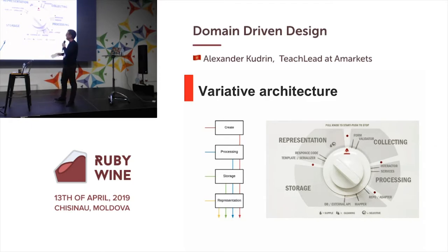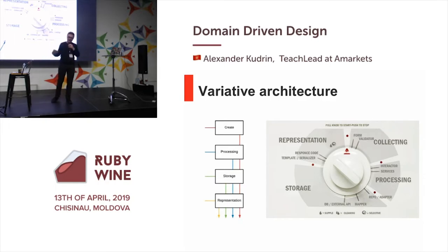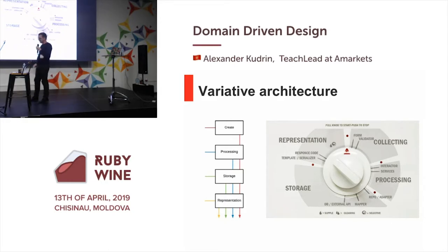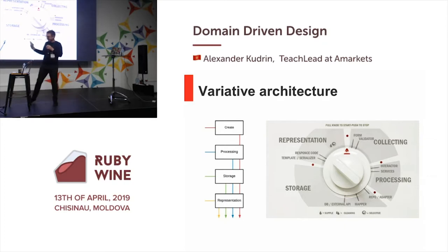Let's see our implementation. We have four actions here: create, processing, storage, and representation. If you realize some difficult task with different endpoints, you don't need to use all of them — you have four typical ways, marked with colored lines. It works like a variator on your washing machine — you always have rinsing and spinning.